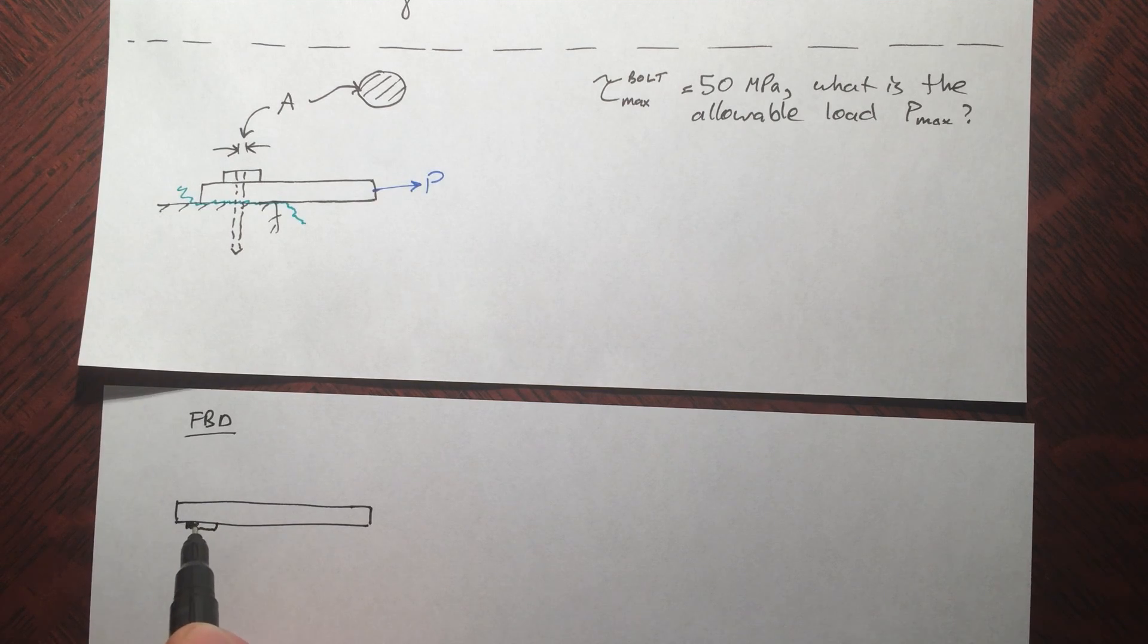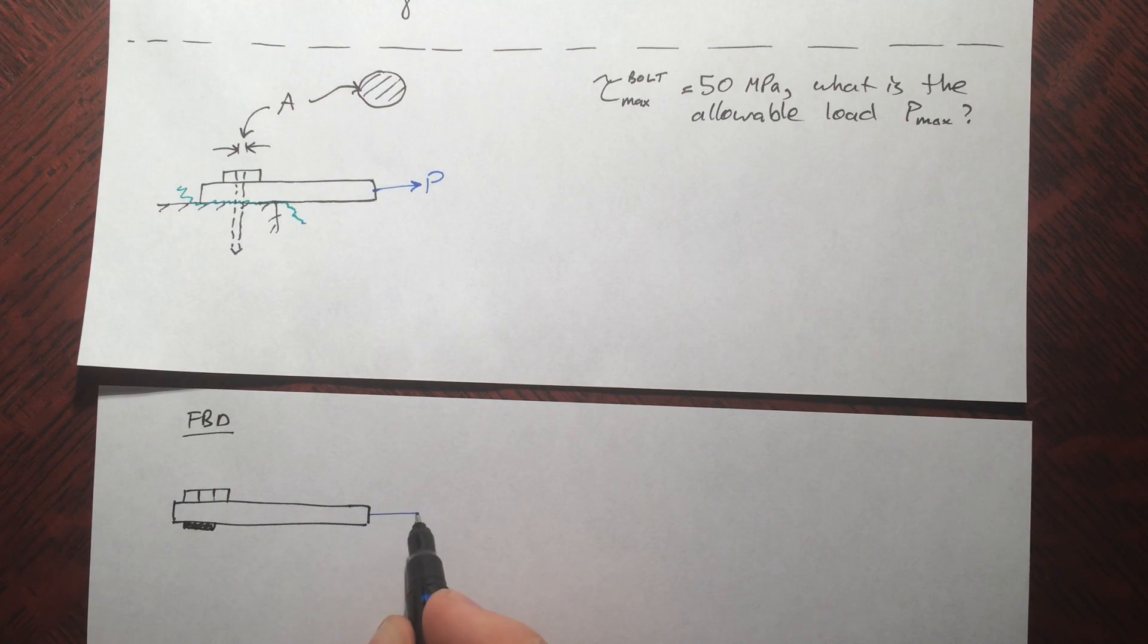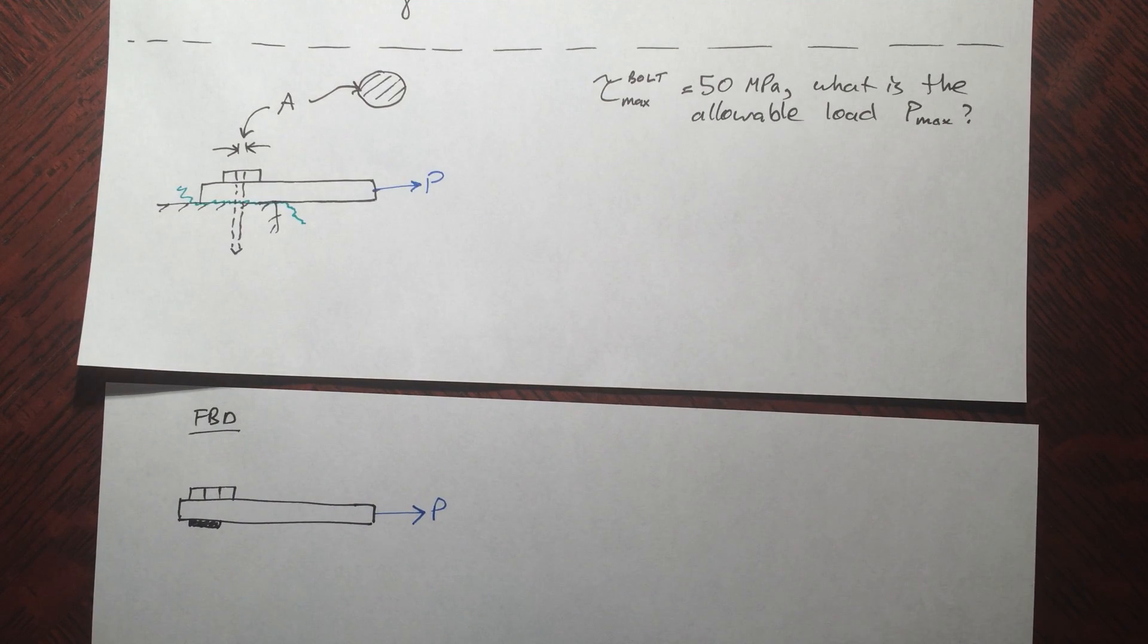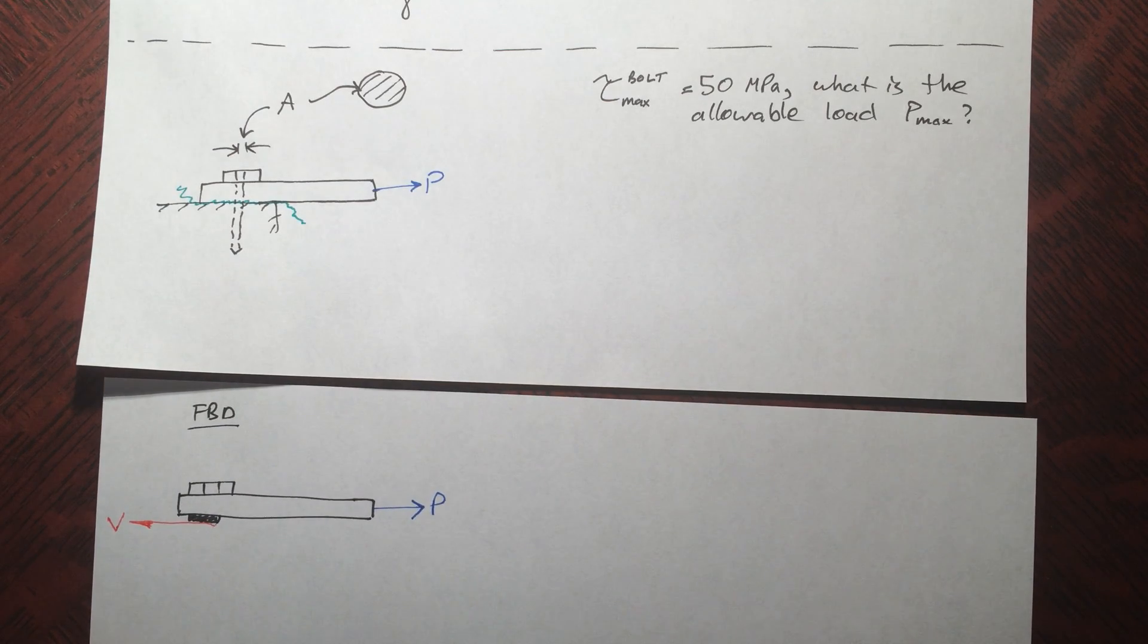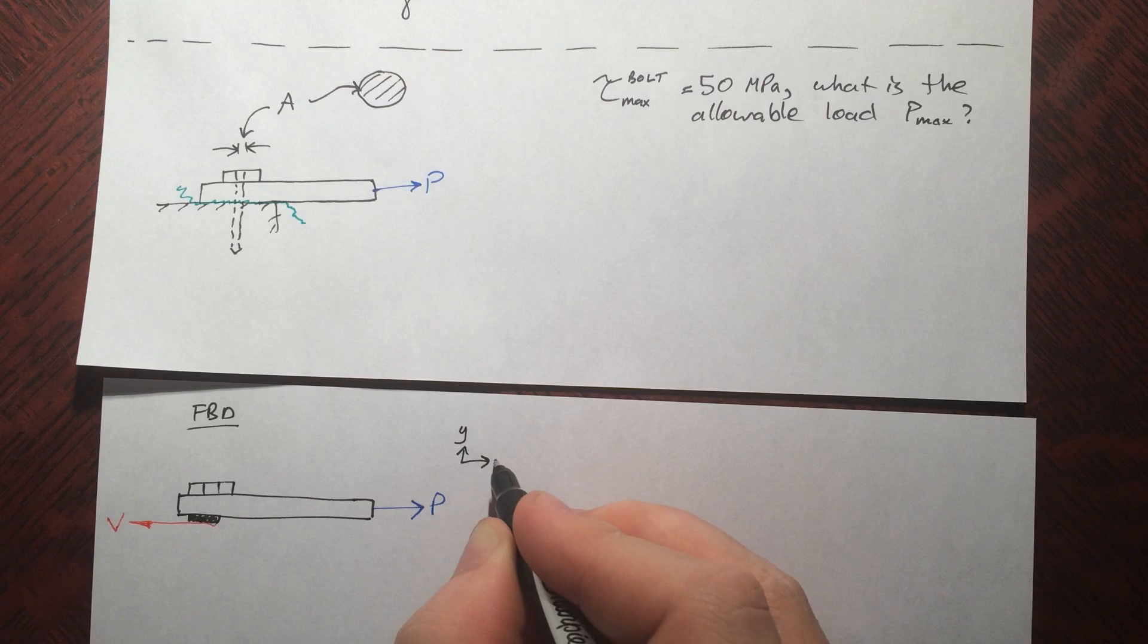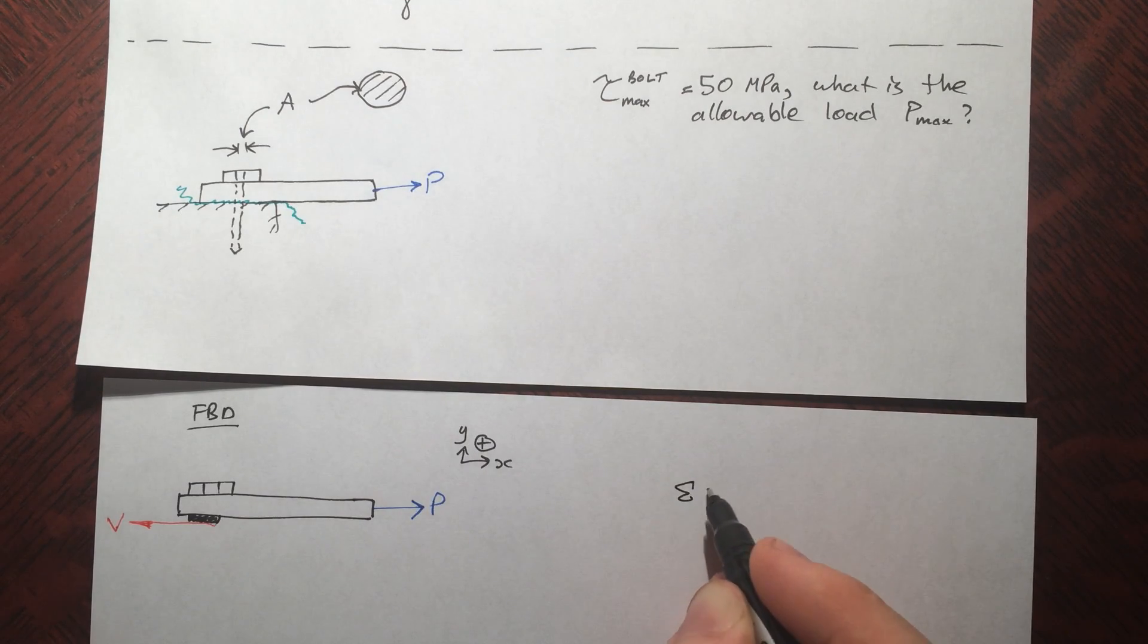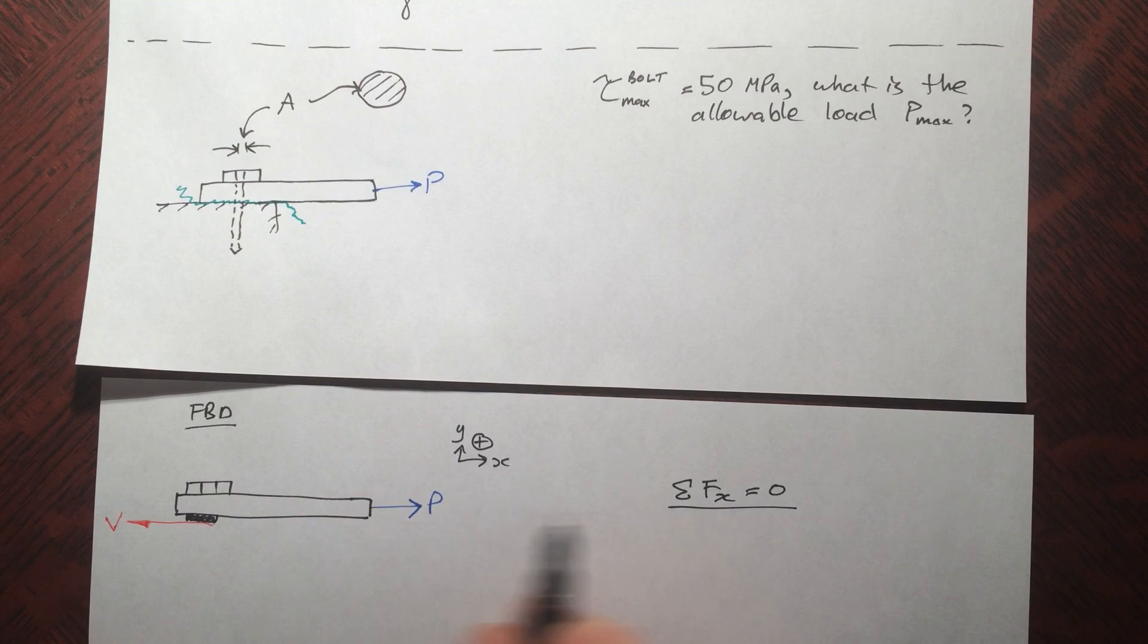Free body diagram: here's the piece that we cut, the bolt is still on top, we have our applied force P, and of course we have a resisting force. The resisting force is going to be shear, shear force V, it's going to be resisting in shear. Don't forget to draw the directions. We sum up the forces in the x to be zero, so just at the point where it shears the whole thing is going to balance, so V equals P. Pretty straightforward.